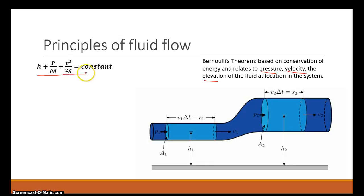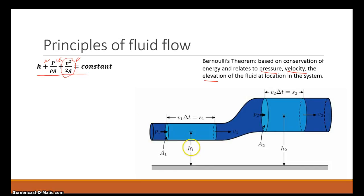Bernoulli's theorem works out to an equation that has an elevation or height component, a pressure component, and a velocity component. These really come down to kinetic and static pressure plus head pressure. Bernoulli's equation states that this sum is constant throughout the system — if you take any two points, say h1 and h2, in a dynamic system with a lot of variety, and look at the summation of those three components, they should be equal at both points.